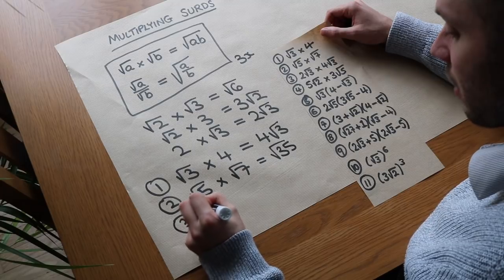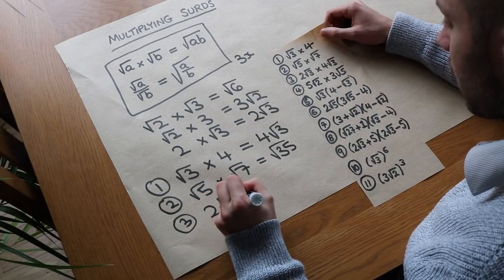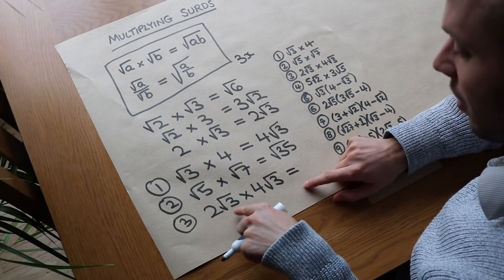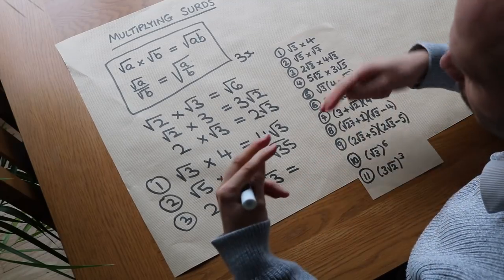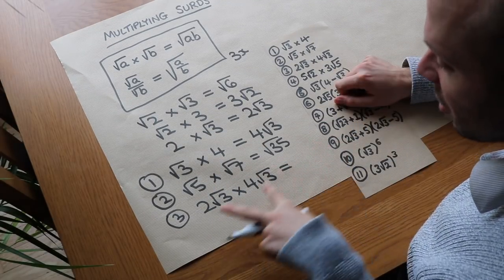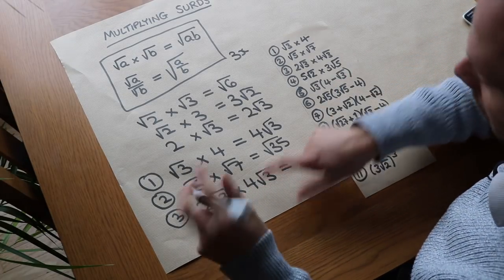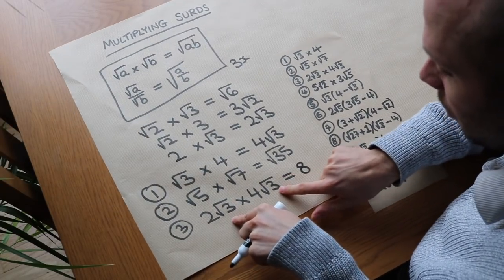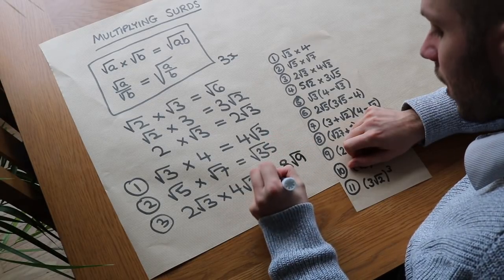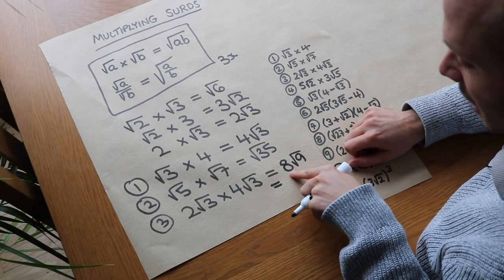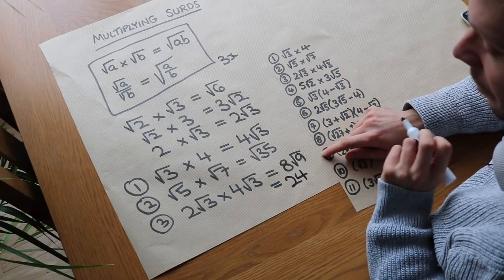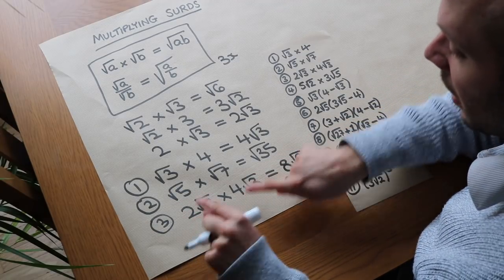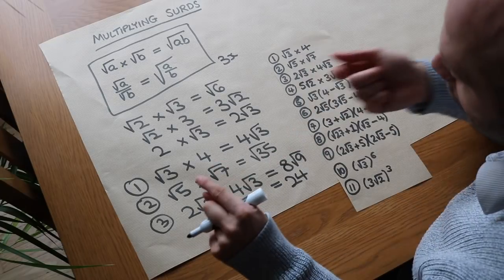Now the third one — this is where it gets more interesting: 2 root 3 times 4 root 3. What we do here is we're still multiplying everything together, so it's 2 times root 3 times 4 times root 3, and when you multiply numbers together it doesn't matter what order you multiply them in. So we could times the 2 and the 4 together first — 2 times 4 is 8 — and root 3 times root 3 is root 9, but root 9 is just 3. So it's 8 times 3, which is 24. The key here is that you multiply the non-surds together and multiply the surds together separately, then put them together.